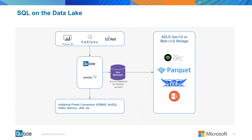By default, Presto is working with the Hive Metastore, and this scenario is actually running on Azure Database for MySQL service. But I can also connect in any one of these additional sources — a variety of different RDBMS connections, NoSQL connections, even real-time streaming processes like Kafka. On the Hive side, depending on how I've got my data set up in the object store, I could have it on ADLS Gen 1 or 2, blob version 1 or 2, in a variety of different formats. I can have all of that data joined together in a single query.